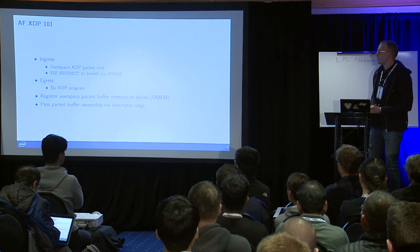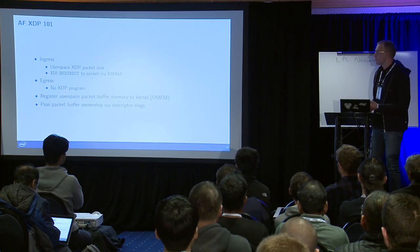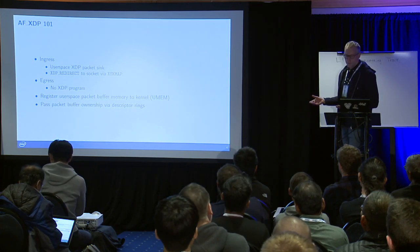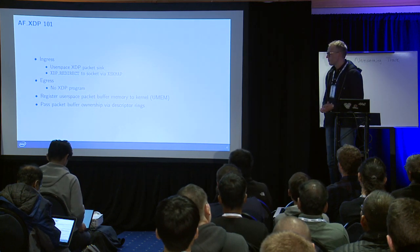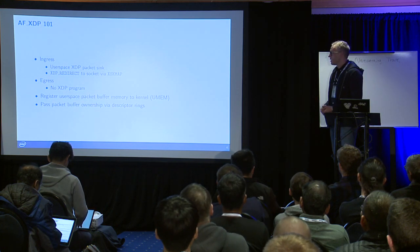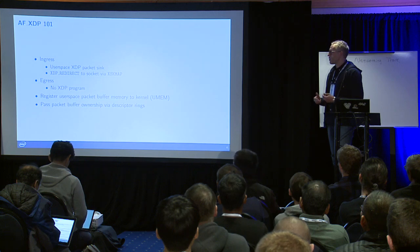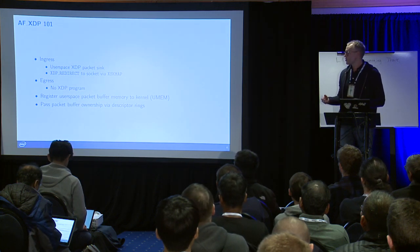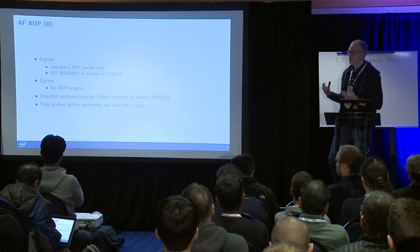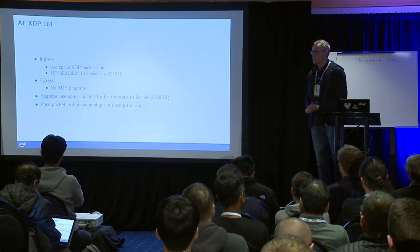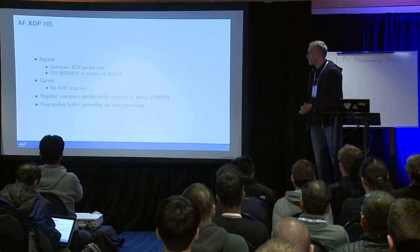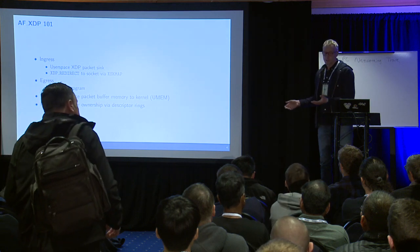AF-XDP was introduced in kernel 4.18, so it's available right now. From an XDP perspective, AF-XDP is just another packet sink. For example, there's no difference from AF-XDP to, say, CPU map. With CPU map, you use the XDP redirect action to take a frame received in the XDP program and hand it via the CPU map, and you get the frame executed in another CPU on the Linux stack.